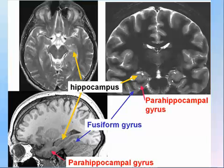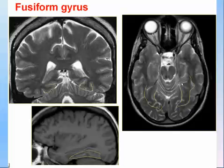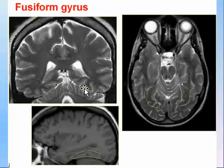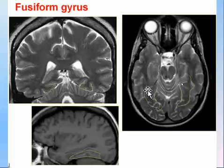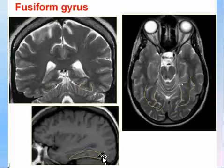The last important gyrus is the one resting on the cerebellum, called the fusiform gyrus. It is limited posteriorly by a defined line and is seen resting on the cerebellum in coronal section.